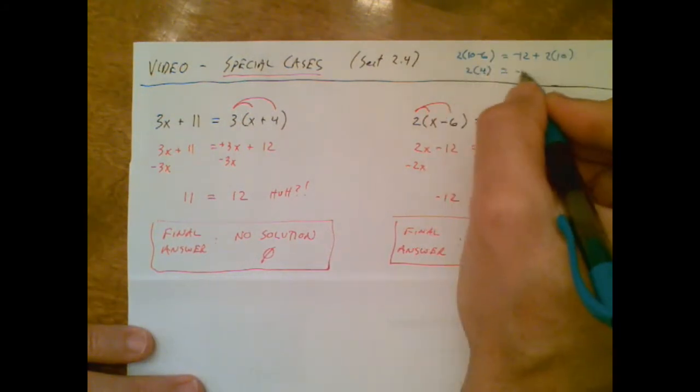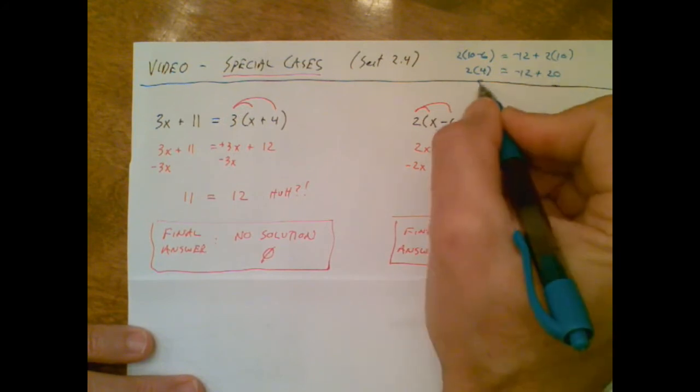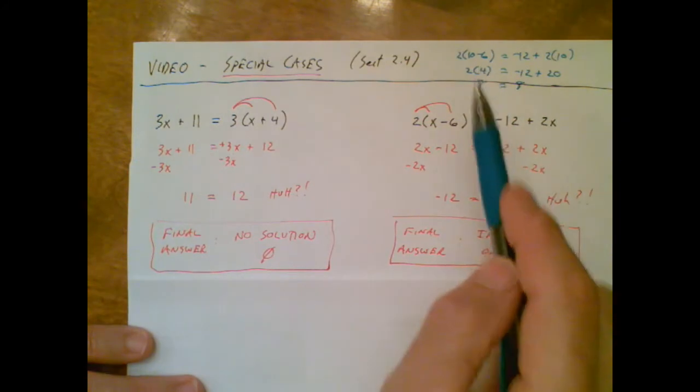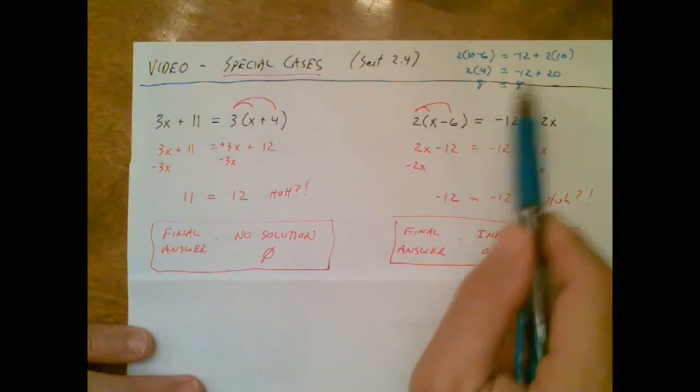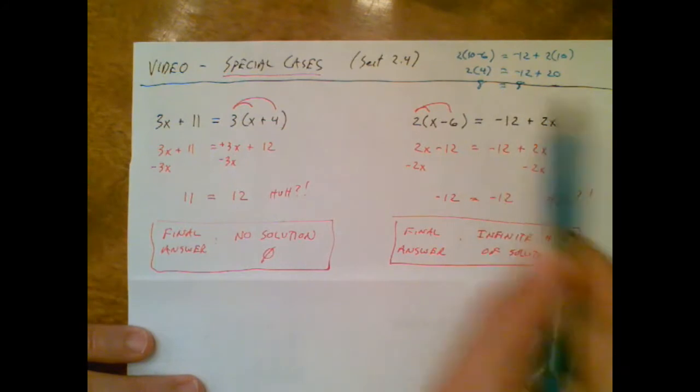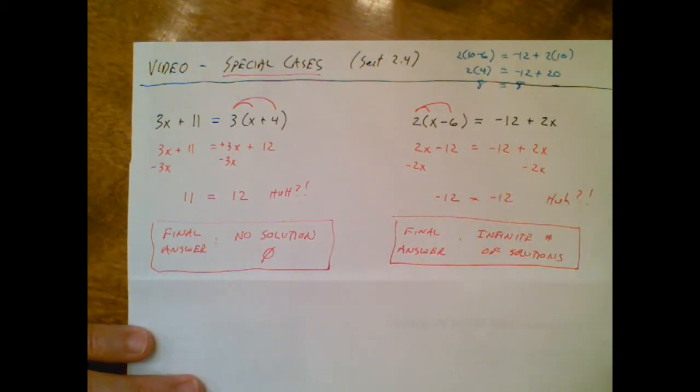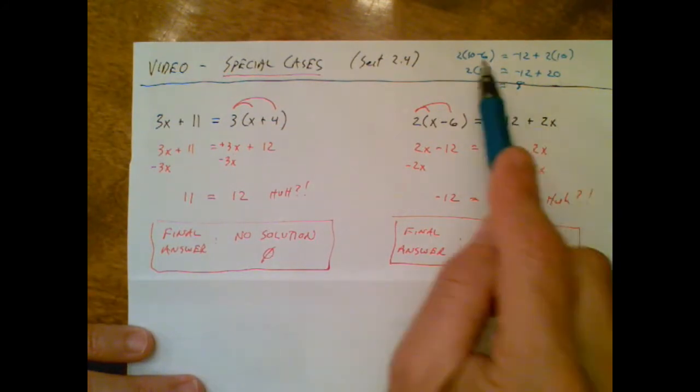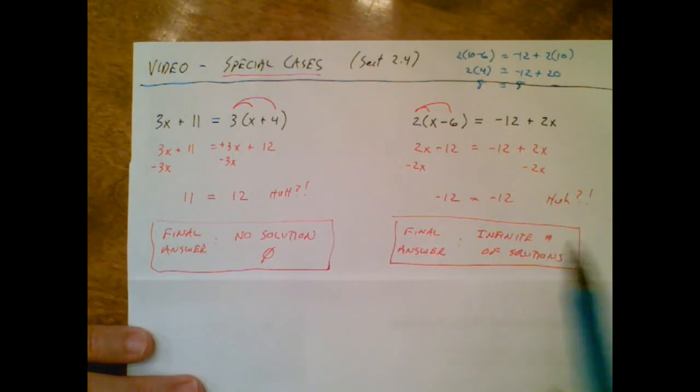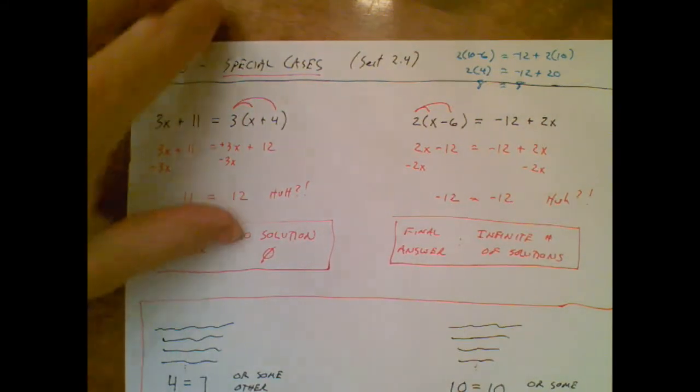This is negative 12 plus 20, which ends up equaling 8 on both sides. So pulling a 10 out of thin air made this equation work. I guarantee you if you pulled a 27 out of thin air and did that same thing, it would work. Any number in the world will work.